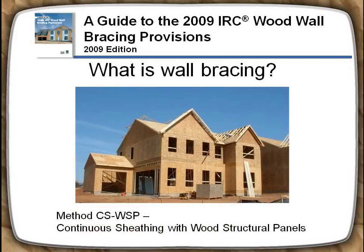Wall bracing is typically formed by adding sheathing to wall framing. The sheathing on the wall resists wind and earthquake loads directly. The house in the photo is braced using the continuous sheathing method with wood structural panels. This method is one of fifteen for bracing walls described in the wood wall bracing provisions.